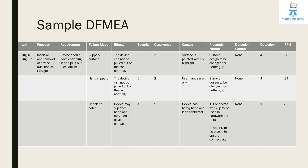The second failure mode is hand slippery — caused by an oily or viscous substance on the user's (driver or passenger) hand. The effect is the device cannot be pulled out of the car normally. Severity is 3, occurrence is 2, because our hands won't always be that oily. Cause is that the user's hands are oily. Prevention control is to change the surface design for better grip — using matte finish or a textured design. Detection control is none, detection rating is 4, and RPN is 24 (3 × 2 × 4).